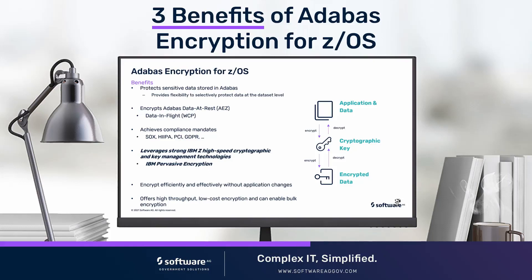The data in flight is as the application sends data to the database, or the database sends data back to the application. That's the data in flight, and that's done through a different product — Entire Network, which is product code WCP.